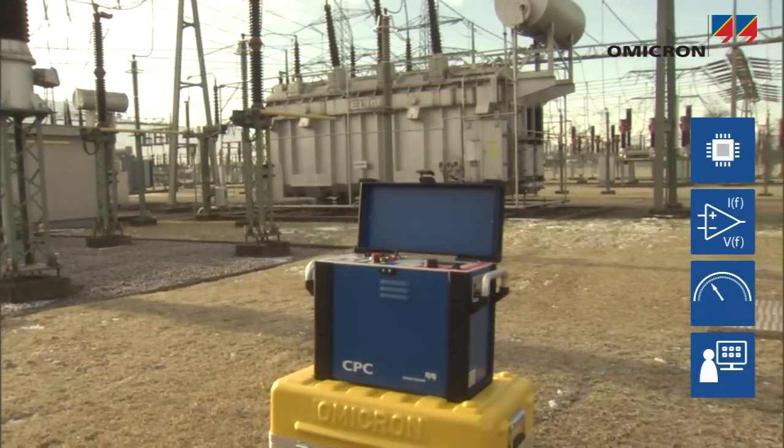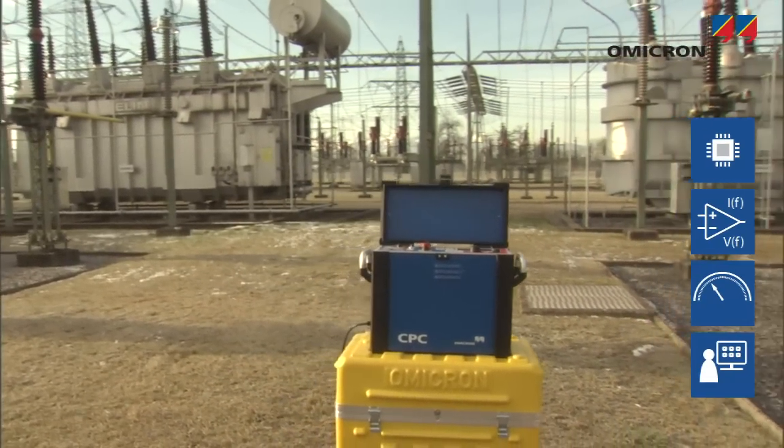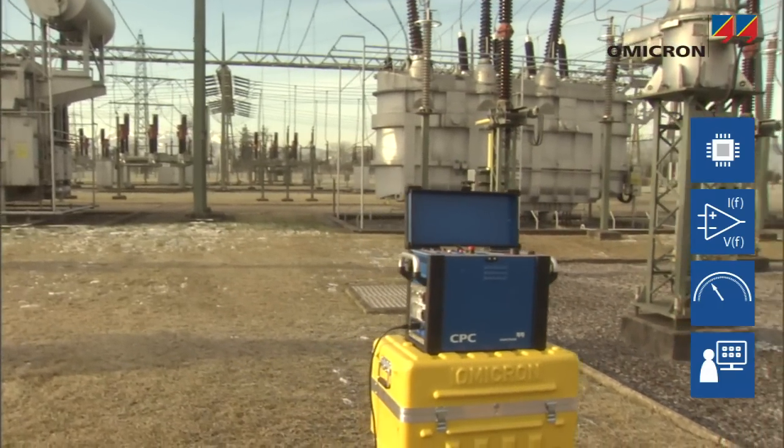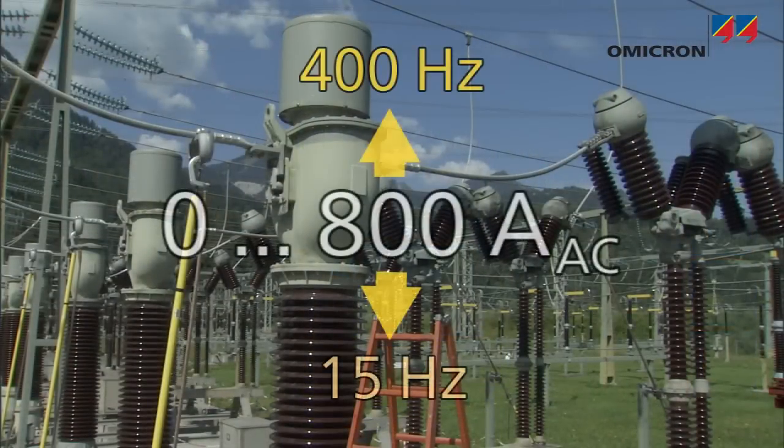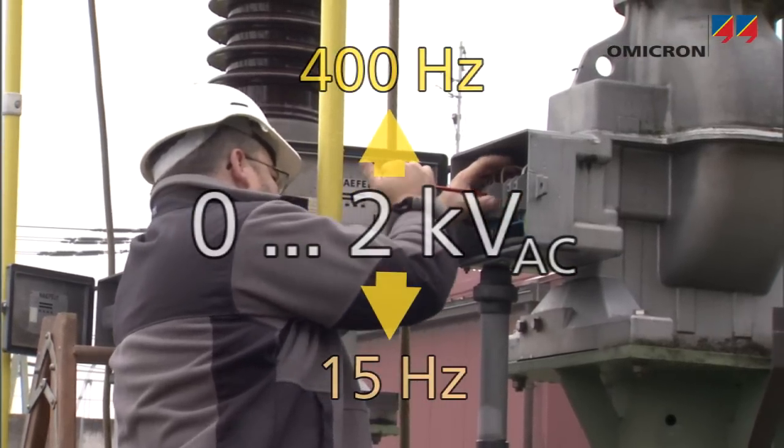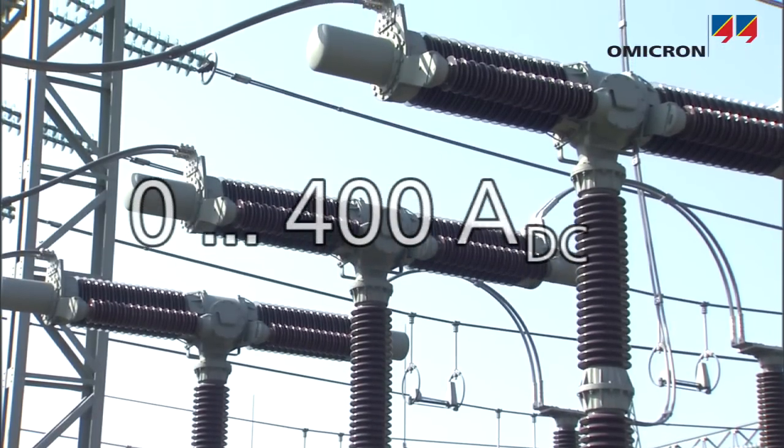The same technological basis is used in the CPC-100, a powerful multifunctional primary test set for substation commissioning and maintenance. It can generate up to 800 amps AC and up to 2000 volts AC at frequencies ranging from 15 to 400 hertz and up to 400 amps DC.